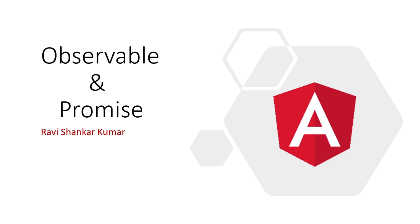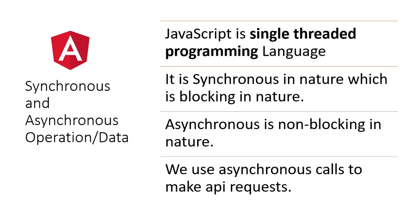As we know, JavaScript is a single-threaded programming language, which means the code in JavaScript is executed line by line. Once the first line gets executed, only then will the second line get executed — it is synchronous in nature. When two processes run and the first process must complete before the second starts, that scenario is called synchronous. If your first process is not completed, you cannot execute the second process, so this is also blocking in nature.